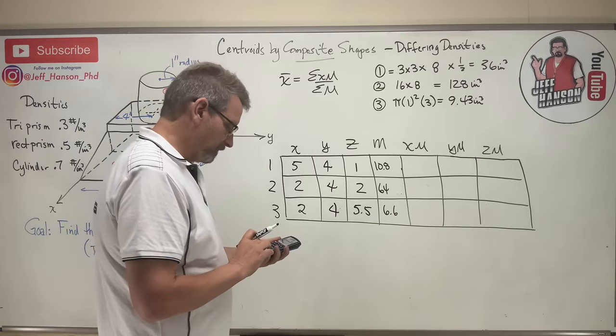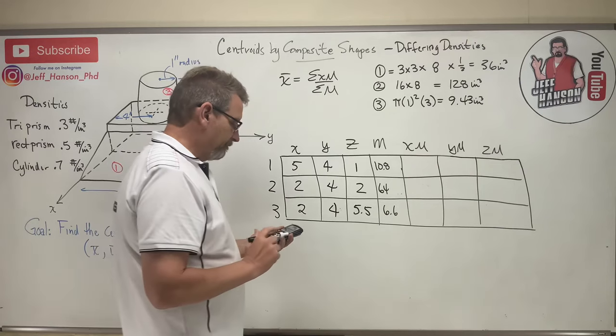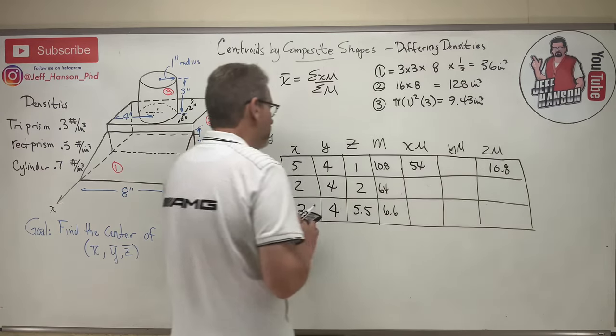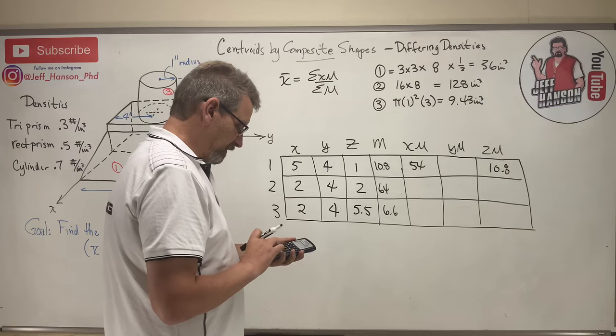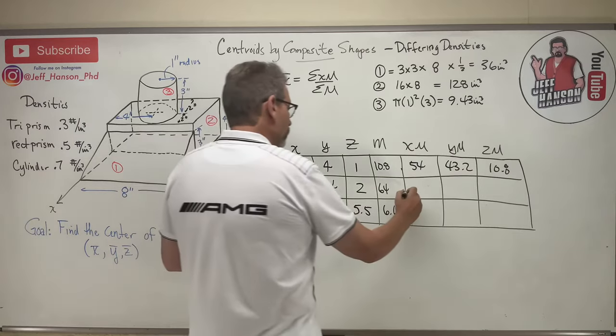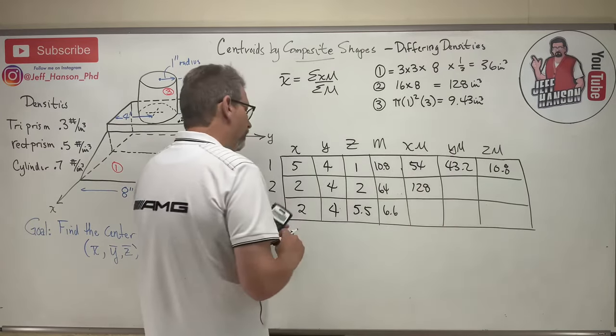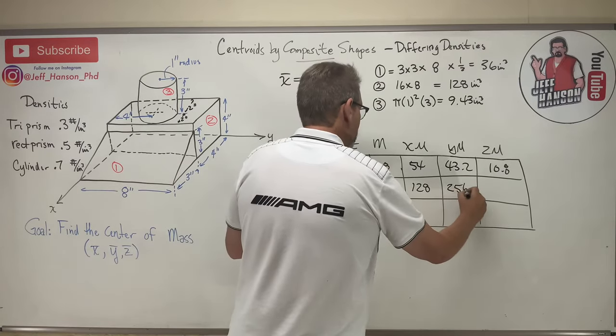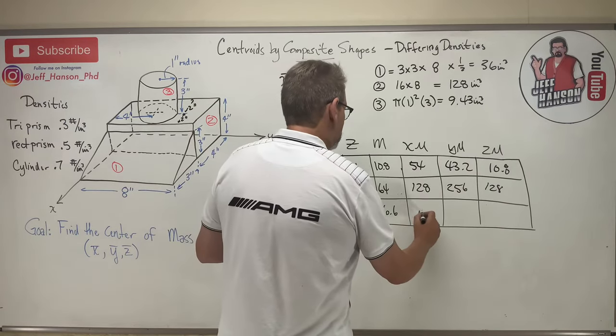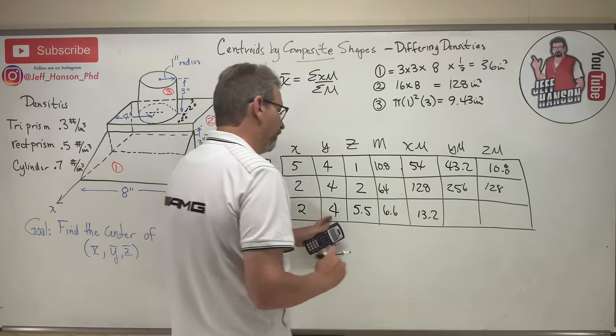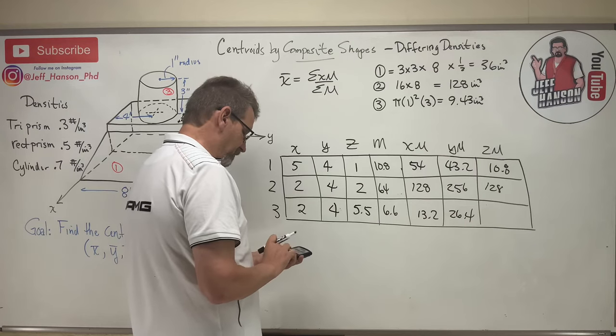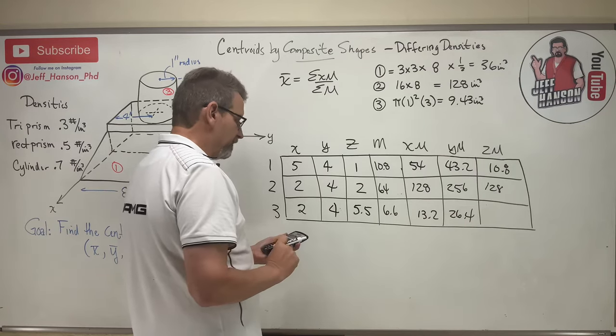Now we just got a little multiplying ahead of us. Five times 10.8 is 54. I know this one over here is 10.8. Four times 10.8 is 43.2. And then two times 64 is 128, four times that would be 256, and then 128 again. And then down here two times 6.6 is 13.2, times four is 26.4, and then 5.5 times 6.6 equals 36.3.